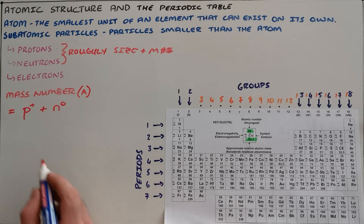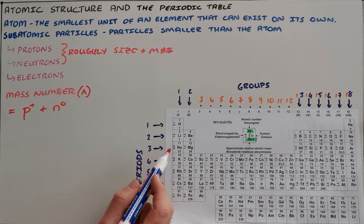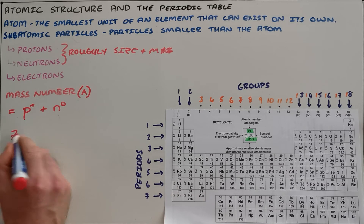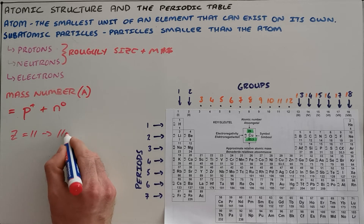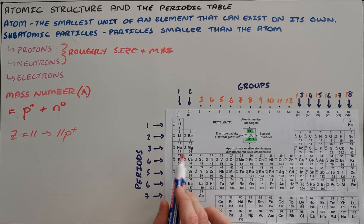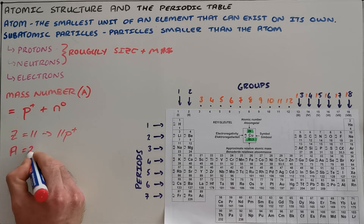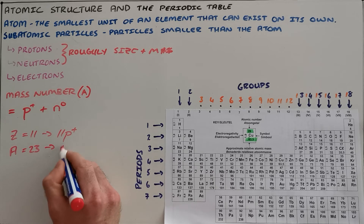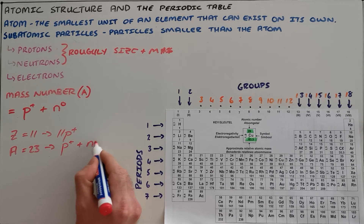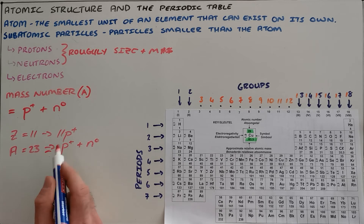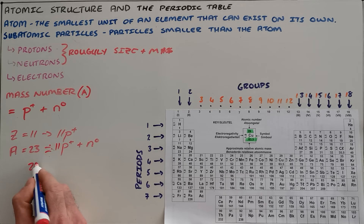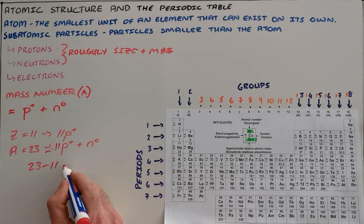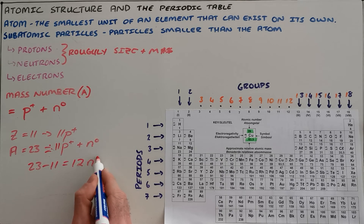Taking sodium as an example, sodium has an atomic number of 11. The atomic number has the symbol Z, so Z equals 11 tells us there are 11 protons in a sodium nucleus. Sodium has a mass number, symbol A, of 23, meaning the sum of protons and neutrons equals 23. Since we know there are 11 protons, we calculate: mass number 23 minus atomic number 11 gives us 12 neutrons.